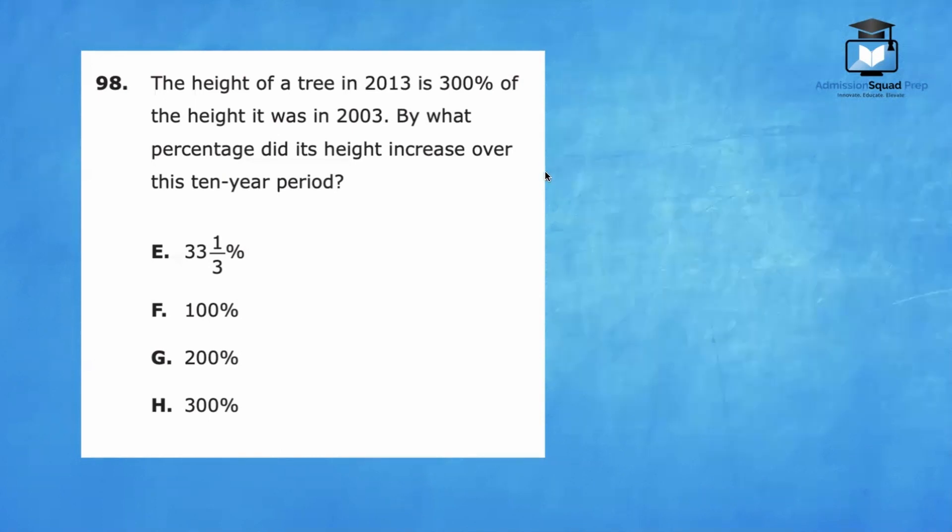Number 98. The height of a tree in 2013 is 300% of the height it was in 2003. By what percentage did its height increase over this 10-year period? Let's start off by using some numbers that will help us to contextualize what is going on in the problem. Let's say the height of a tree was 10 feet in 2003.